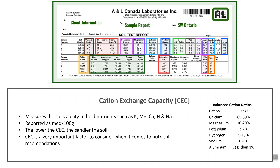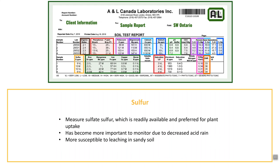Sodium should be less than one percent and aluminum the same at less than one percent. Moving to the micronutrients on the second line, starting with sulfur — it is very important for plant production. It is a constituent of proteins and is involved in respiration and nodule formation. What we measure is sulfate sulfur, which is readily available and preferred by plants. Sulfur has become more important to monitor due to decreased sulfur in our atmosphere — we used to receive it as acid rain, but now we add it to most fertilizer blends.